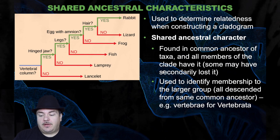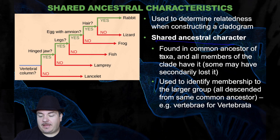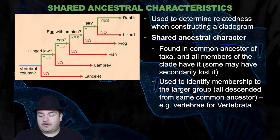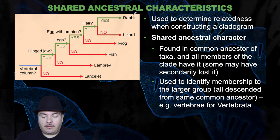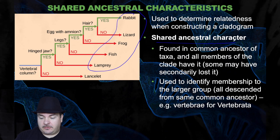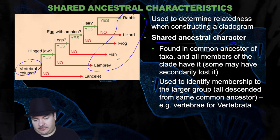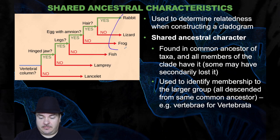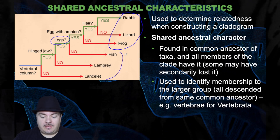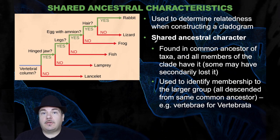When constructing a cladogram, one way of determining relatedness is using shared ancestral characters. These are found in the common ancestor of a taxon and all members of the clade have it, although some may have lost it secondarily. It's used to identify membership in the larger group. For example, all of these organisms share vertebrae — a spinal column — as a shared ancestral character. Comparing another subgroup, they all share legs as a shared ancestral character, whereas other organisms in the larger group do not have legs.